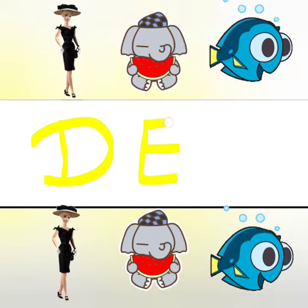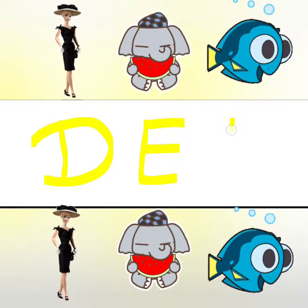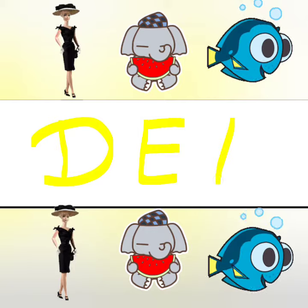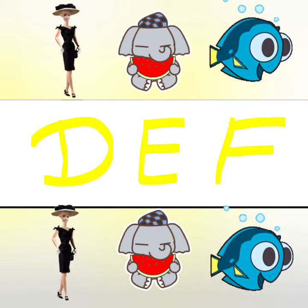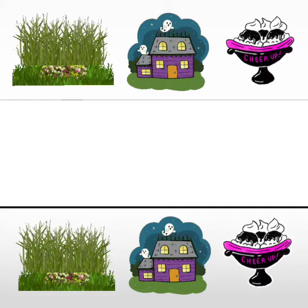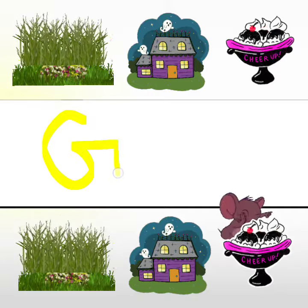D for Doll, E for Elephant, F for Fish, G for Grass.